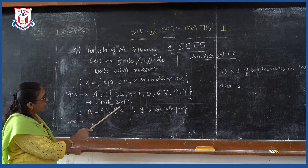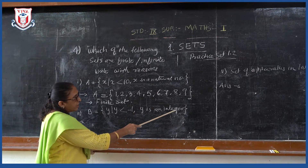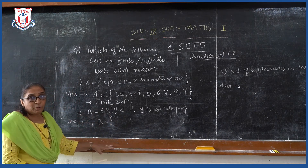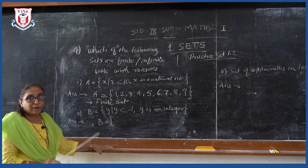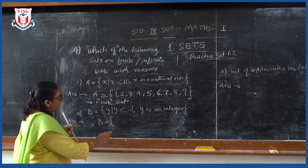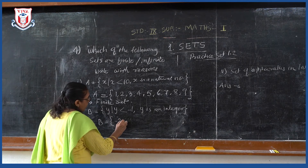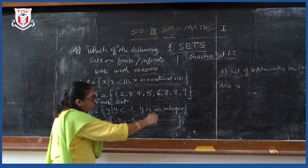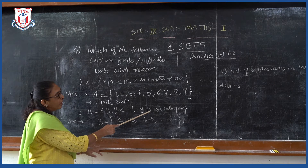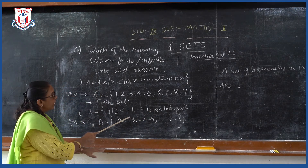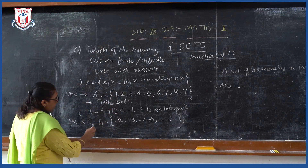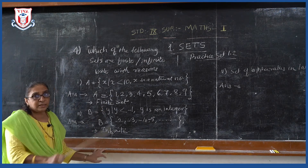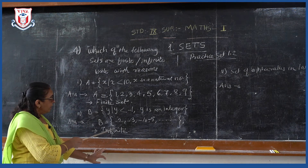B is a set of all Y such that Y < −1 and Y is an integer. Values of Y less than −1 are: −2, −3, −4, −5, and so on — dot dot dot means infinite because there is no other condition given. All integers less than −1 will be included, so this type of set is called an infinite set. The first set is finite and the second is infinite.